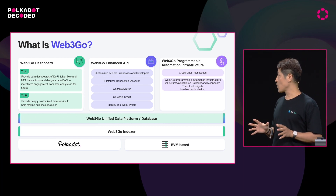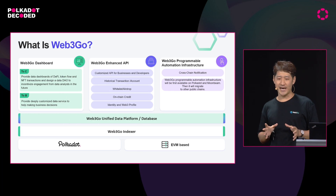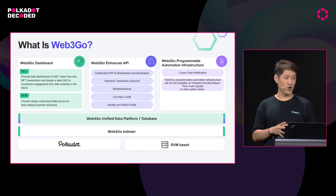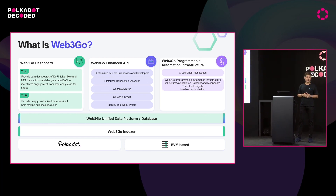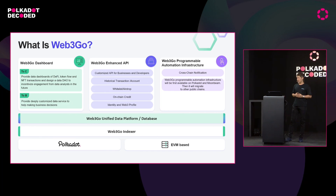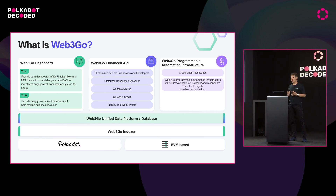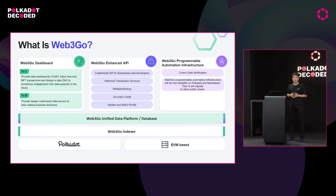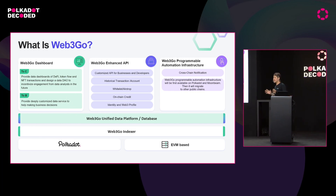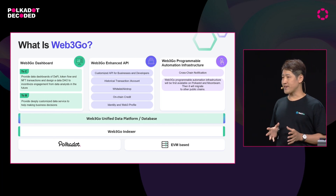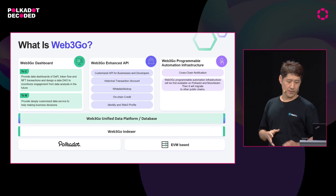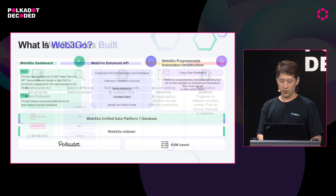Except for the dashboards, we also have different APIs which provide projects like Lentitree and Moonbin with their own DApp capabilities used in their services. Beyond these two parts, we also have, in the big picture, the programmable automation infrastructure, which enables developers to create their own DApps using our services.